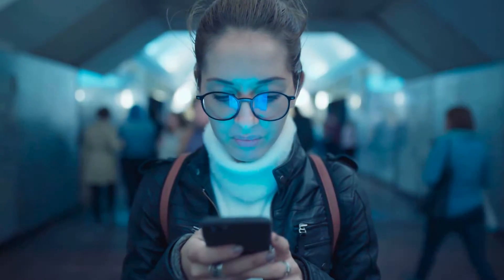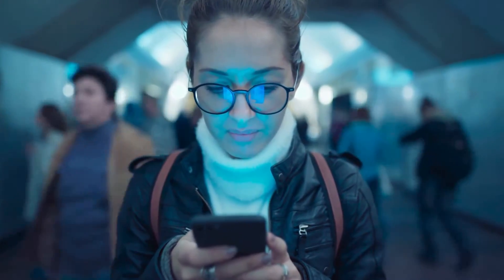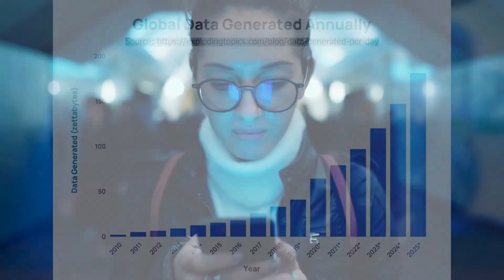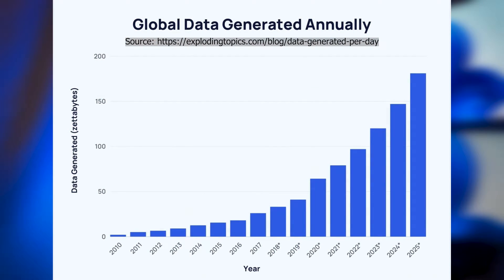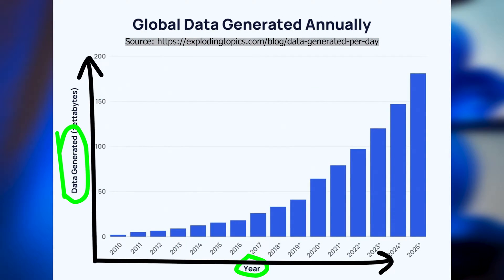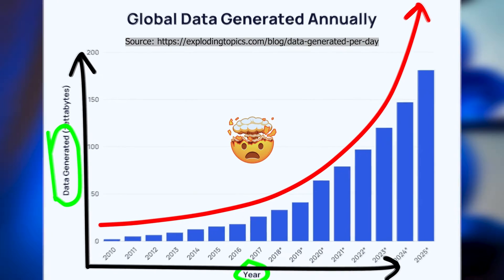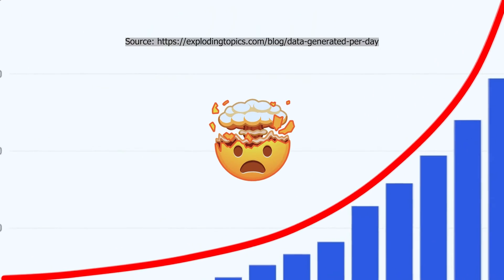You may not notice it, but you're generating more data now today than you ever have before. There's been all sorts of studies done on this. If you take a look at a graph of average data creation over time, you'll see it's basically just an exponential curve, and that's pretty nuts to think about.